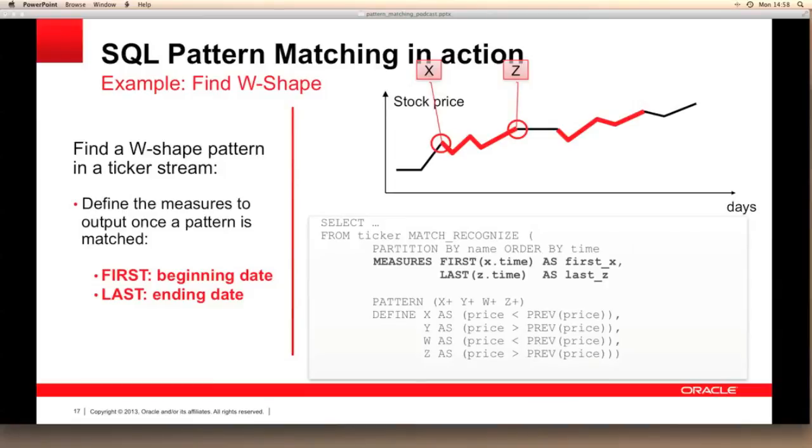In this example we want to return the start date and the end date of the pattern. Therefore, as X defines the pattern at the start of the W-shape, we need the date from the first instance of X, which is shown as first X dot time. Z defines the end pattern of our W-shape, so we need to know when that pattern finally ends. We need to extract the last date relating to Z, which is shown as last Z dot time.